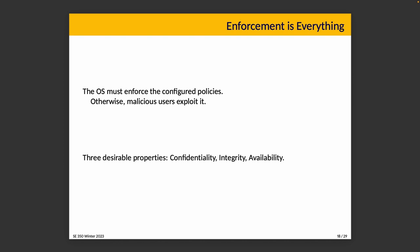Confidentiality means information should only be accessed by those who are authorized to see it. Integrity means the information should be consistent and correct. And availability means information or services should be available when they're needed. Easier said than done — perfect uptime for availability is probably not feasible, but we'll do our best and try to get as close as we can.